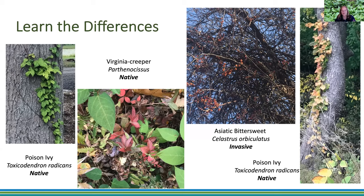Poison ivy is native — birds like the seeds, that's why it keeps spreading. It's an important food for them, though not so good for humans. Stay away from it if it bothers you; travel with your Tecnu soap. Jewelweed, the native plant, is said to be a natural antidote to poison ivy. If you get poison ivy on you and see some jewelweed growing nearby — those with the orangey flowers and turquoise seeds that go flying out in August — crush that up and see if it counteracts the poison ivy.